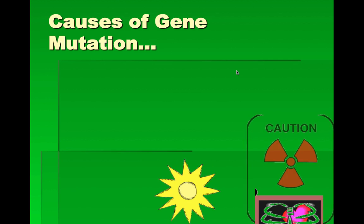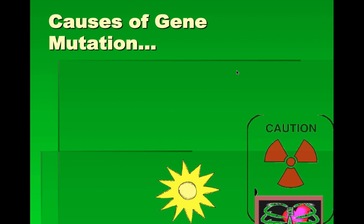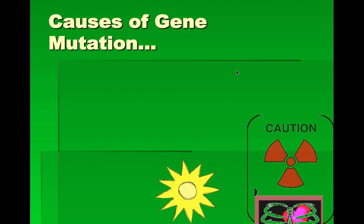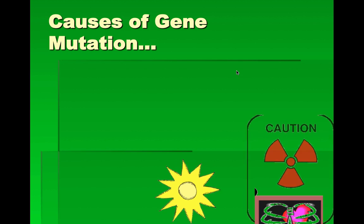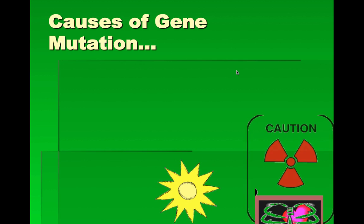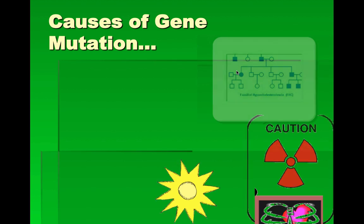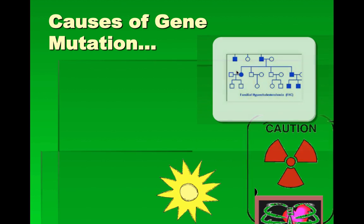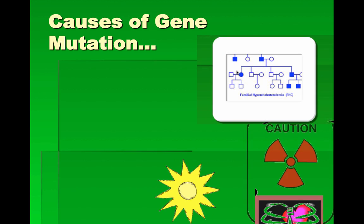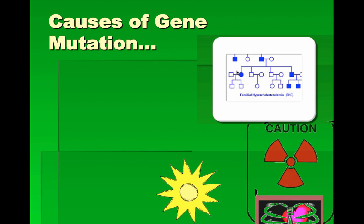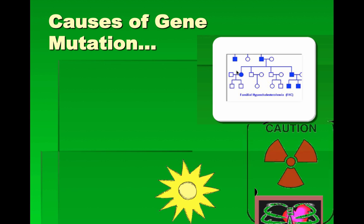Mutation is basically when one or more of those letters gets deleted, replaced, or you can have extra letters added in, or a whole sequence can get inverted — there are all kinds of things that can happen. You're basically changing the sequence of letters in the gene.